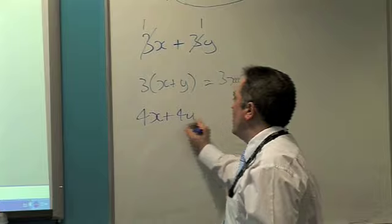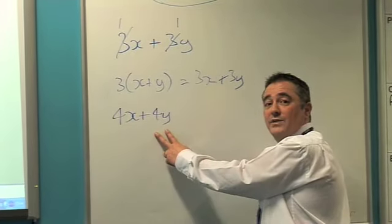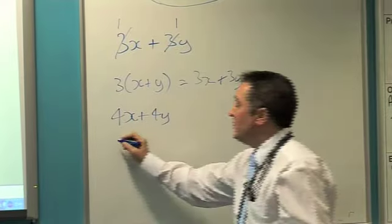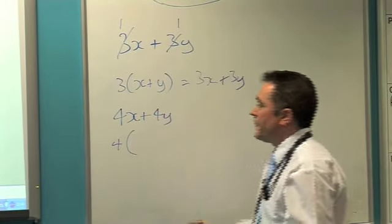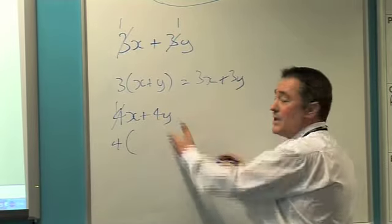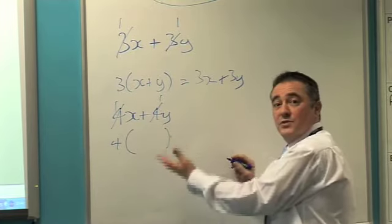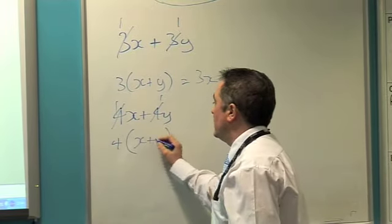4x plus 4y. Again, what is our highest common factor? It's 4. 4 outside my bracket. What do I have to multiply 4 by to get me 4? The answer's 1. Same on this side. 1. What's left? Stick inside your bracket. x plus y.